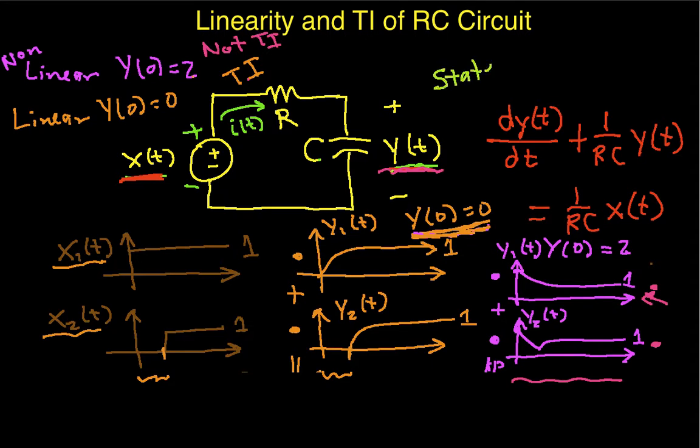This y of t, by the way, is a state variable. Okay? Because, in order to understand the behavior of the circuit, or to predict it, going forward, I need to know what the value of the voltage across the capacitor is. And if I have different values of voltage, that will change what happens in terms of the circuit's future behavior.